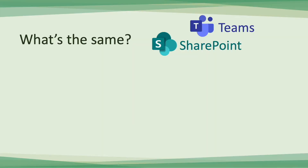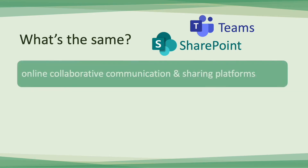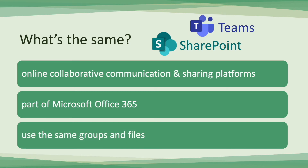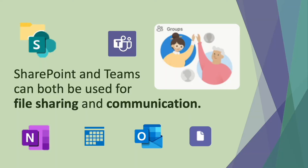So what's the same in these two products? Well, both of them are online collaborative communication and sharing platforms, and both of them are part of Microsoft Office 365. They use the same groups and files within Office 365. That icon on the top left is the SharePoint icon that you can see inside Teams when you're looking at your SharePoint folders, and that Teams icon at the top is the Teams icon you can see in SharePoint when using the same groups, because groups are at the heart of how these and related collaborative products in Office 365 work together.